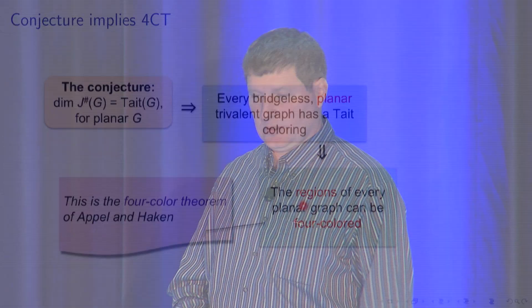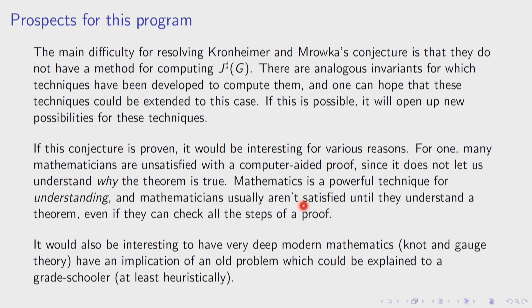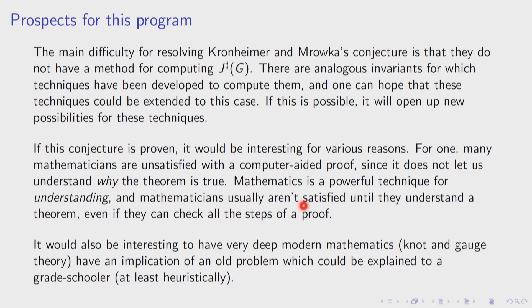This is a motivating project. I've been running a seminar on it trying to understand what they've done. The main difficulty is that they don't really have a method of computing their invariant J-sharp of G. If they could develop techniques to compute that invariant, it would probably allow them to prove the theorem or at least find a counterexample to their conjecture. If they could compute this, it would actually be a breakthrough in three- and four-dimensional topology. It would allow computing other interesting invariants. They came across this somewhat accidentally while investigating invariants for knots.